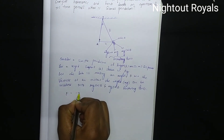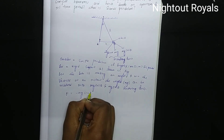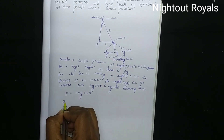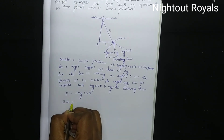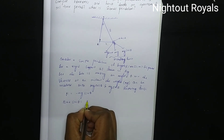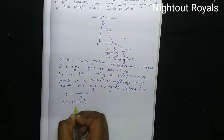F equal to minus Mg sin theta. But sin theta equals x by L.